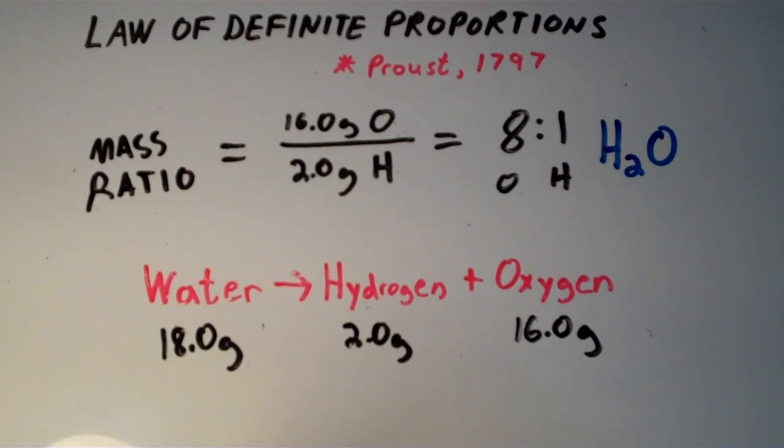That means that for every single water molecule we have two hydrogen atoms and we have one oxygen atom. And since each hydrogen atom has a specific mass and each oxygen atom has a specific mass, the ratio is always going to be the same.